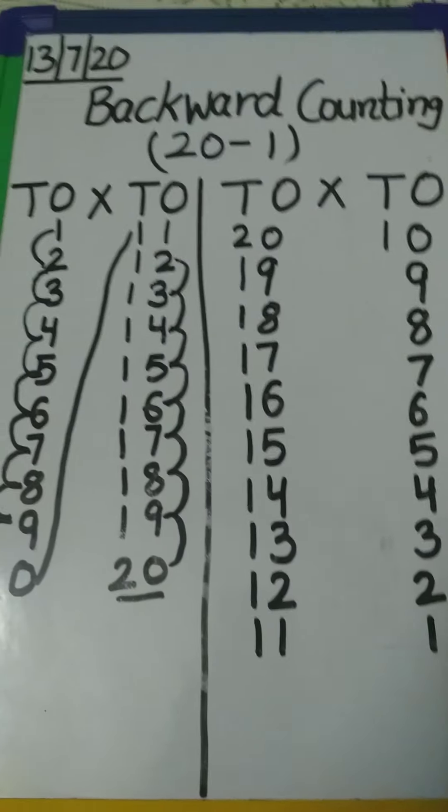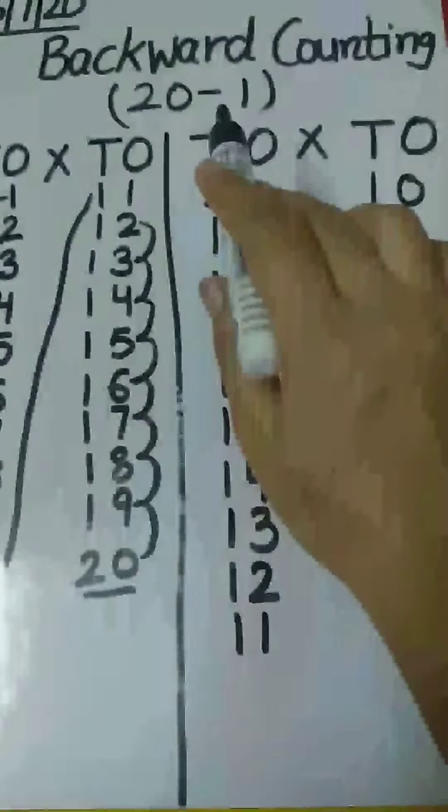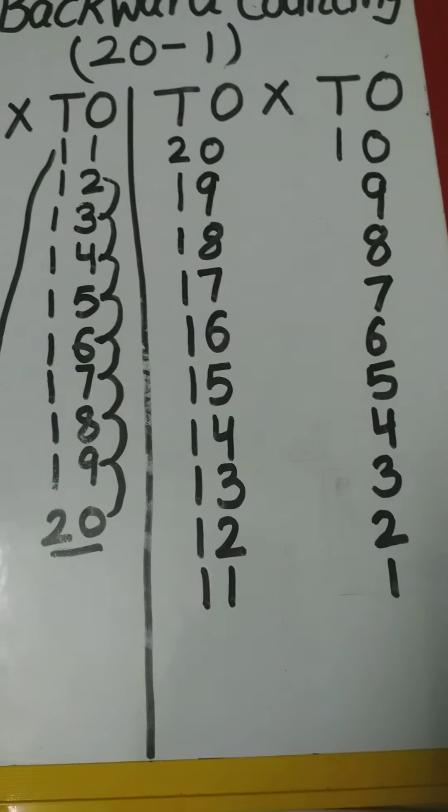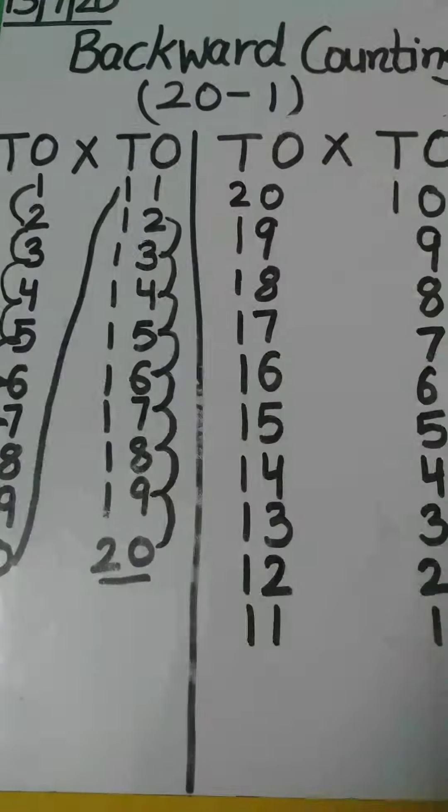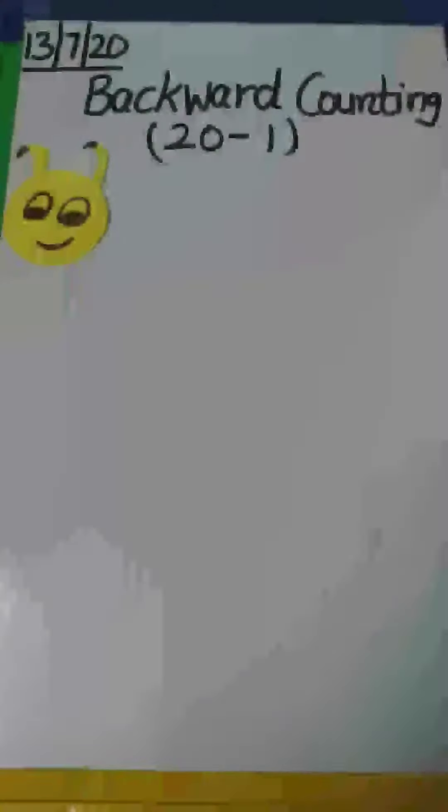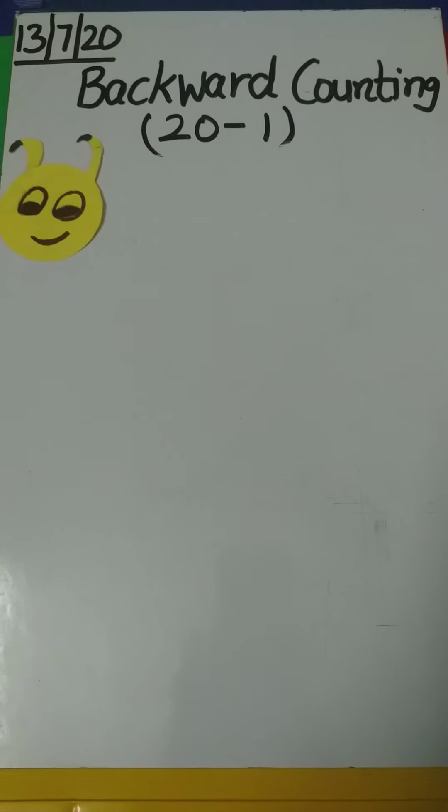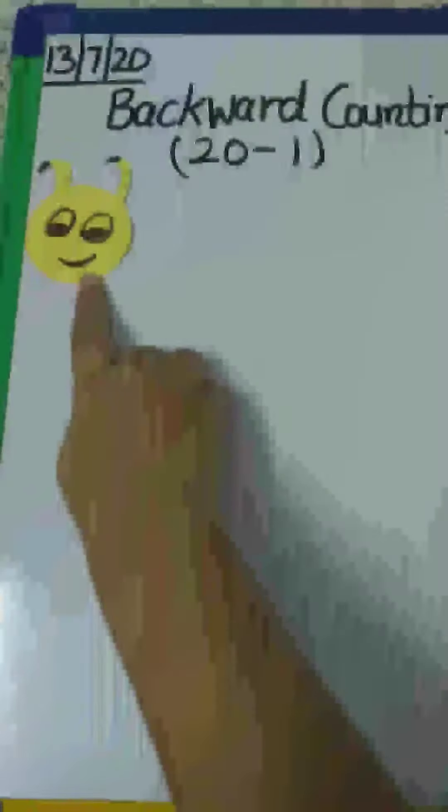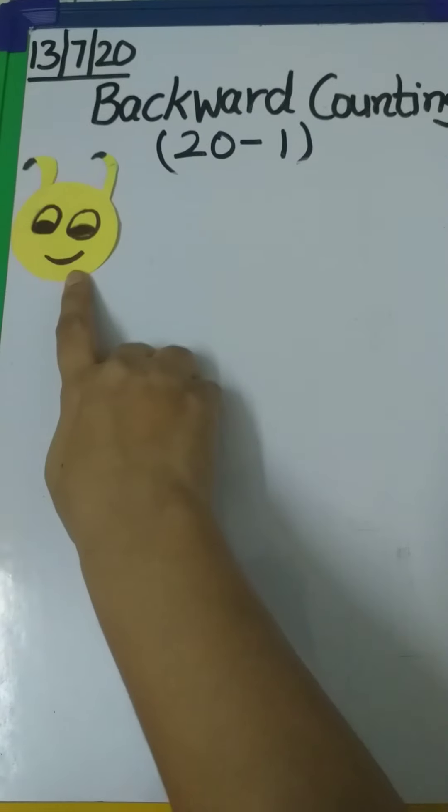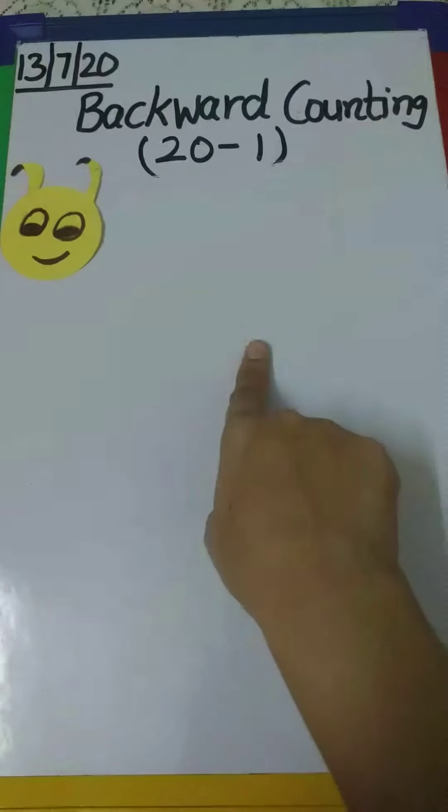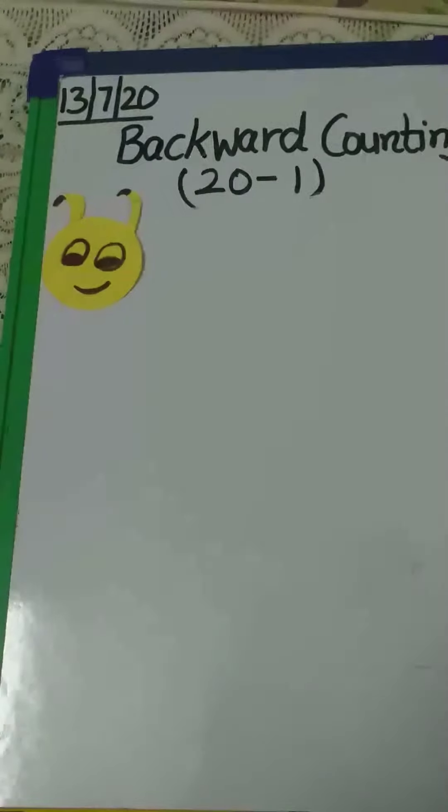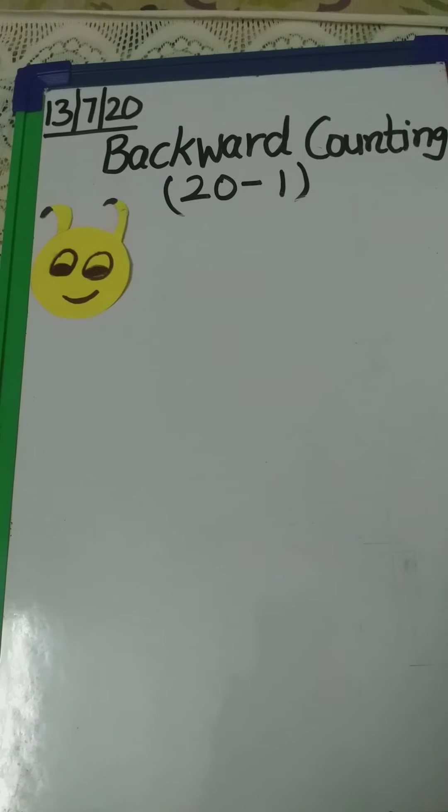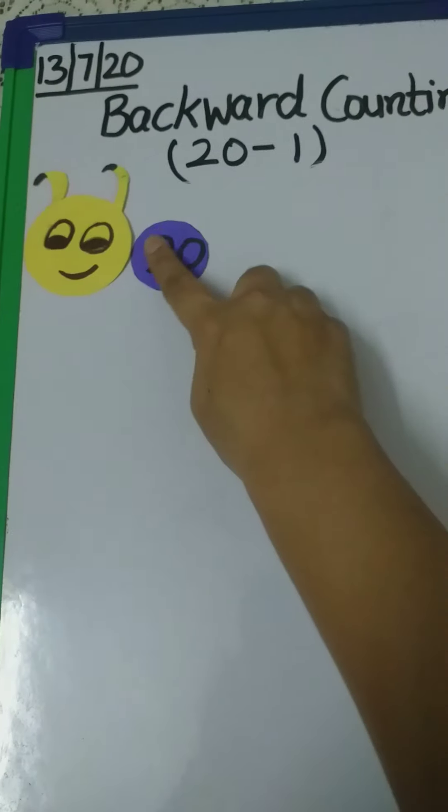So now children, we will do one activity. You can see I made the face of caterpillar, so we will complete the caterpillar. The first number that we are going to stick is number 20.